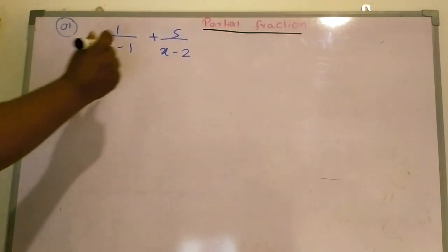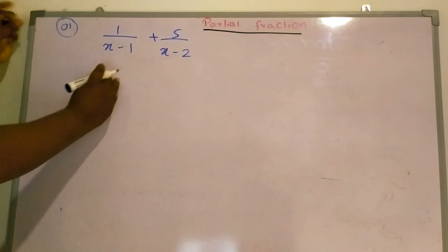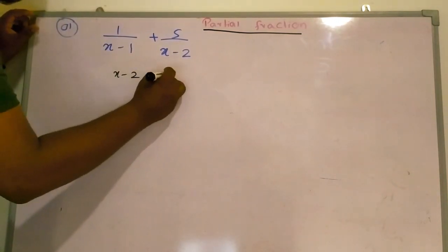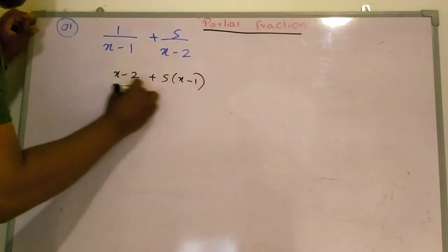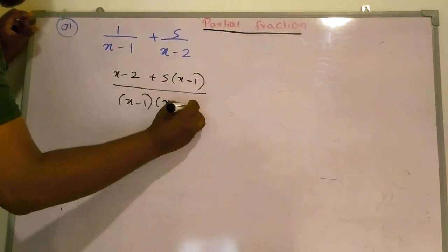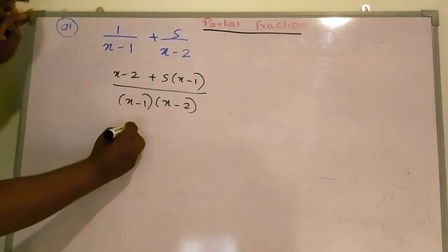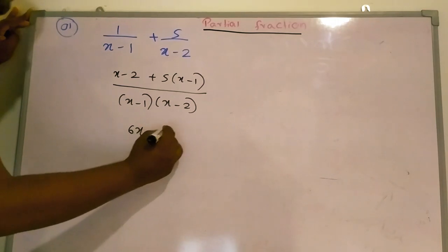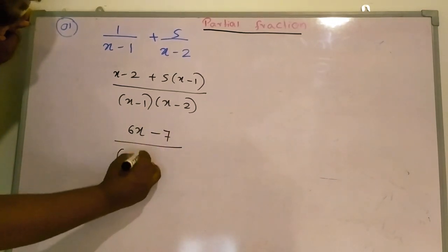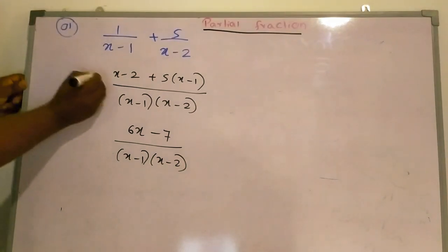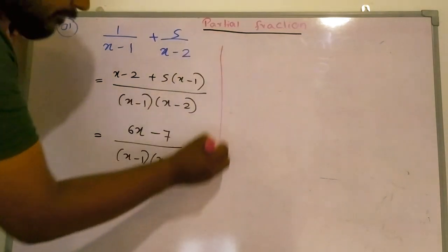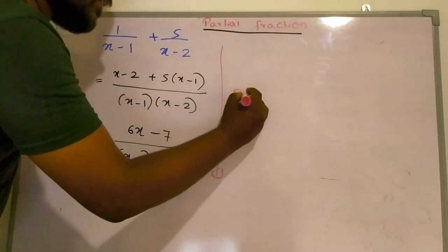In grade 11, what we have done — we have taken a common denominator and simplified the result. So now x will be (6x minus 7) over (x minus 1)(x minus 2). This is the simplified answer of this fraction, and this is known as simplification.